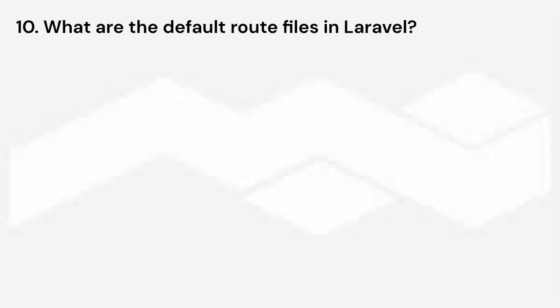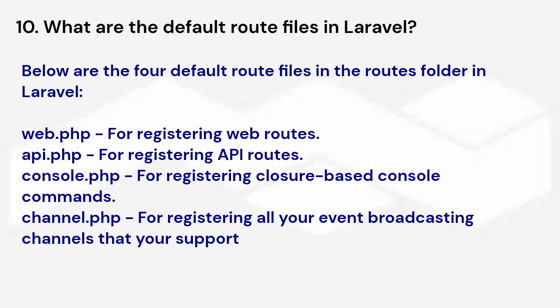What are the default route files in Laravel? Below are the four default route files in the routes folder in Laravel: web.php for registering web routes, api.php for registering API routes, console.php for registering closure-based console commands, and channel.php for registering all event broadcasting channels that your application supports.